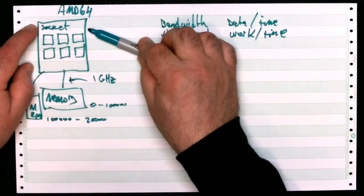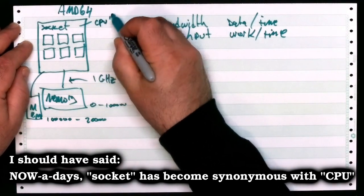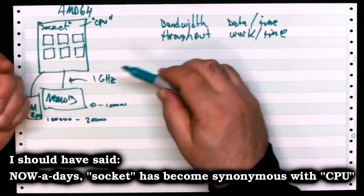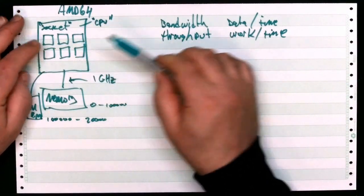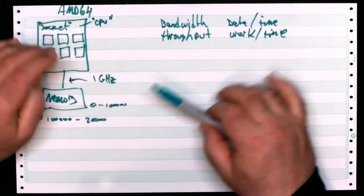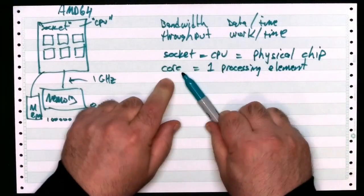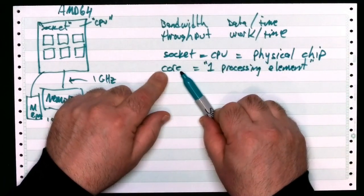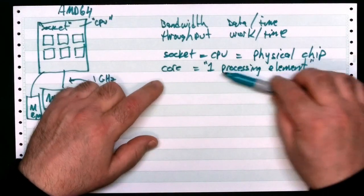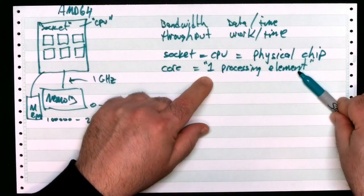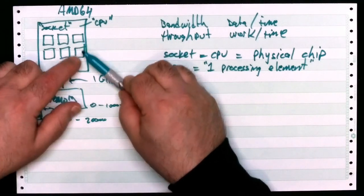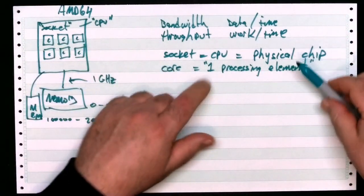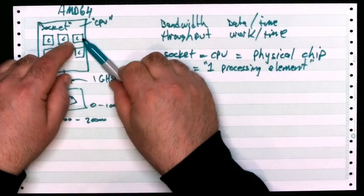So far we've got cores and sockets. Socket is synonymous with CPU - that's still true today. Inside these sockets can be all these cores. One core is one processing element - something that can execute instructions independent of what's happening on the other cores. It is self-contained, autonomous, it does its own thing.